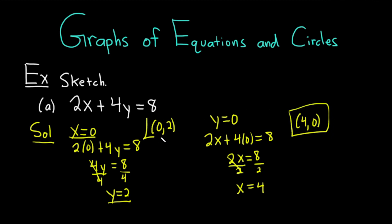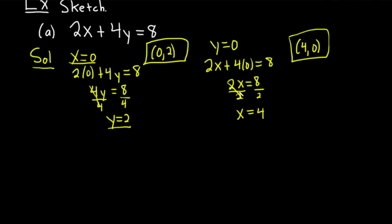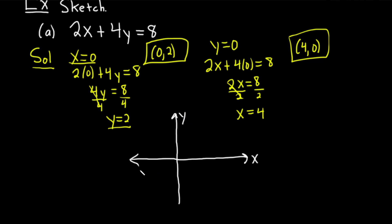So we have two ordered pairs. We can plot these and connect the dots, and we will have the graph of our line — pretty cool. This is a fast method, plus it gives you the intercepts, which is really key. Our first ordered pair is (0, 2), so from the origin we go right 0 and up 2 — big blue dot there. For (4, 0), from the origin we go right 4 — big dot. Then you just draw a straight line connecting the dots, and there is the equation of the line.